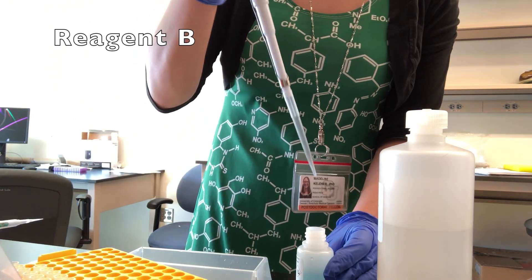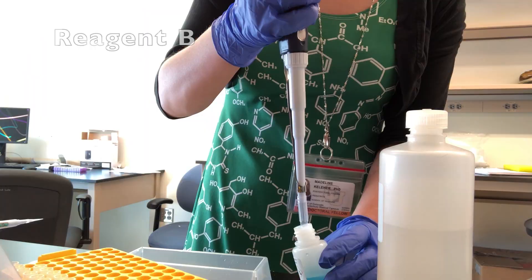Then I add reagent B, which has cupric sulfate. When the copper from the cupric sulfate comes into contact with protein, it will lose a charge, going from plus 2 to plus 1. Any of the copper ions that are plus 1 will be turned purple by the bisaconic acid. So the more purple you see, the more protein there is.